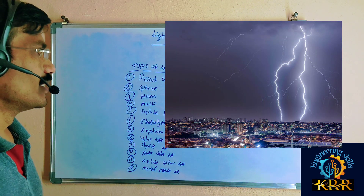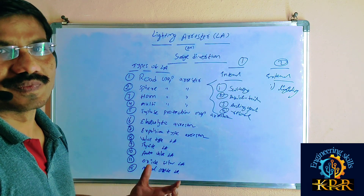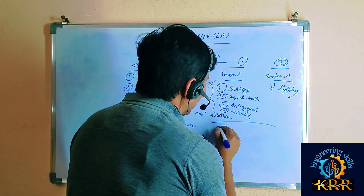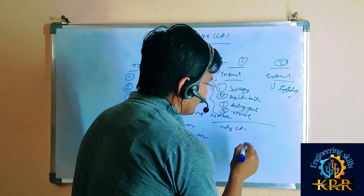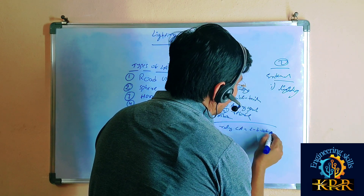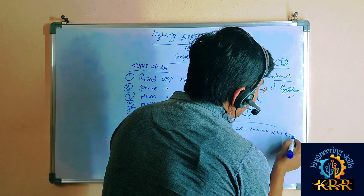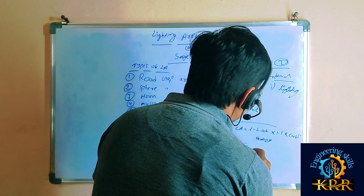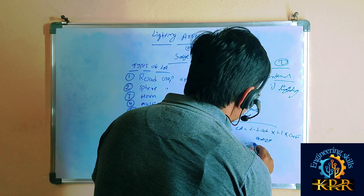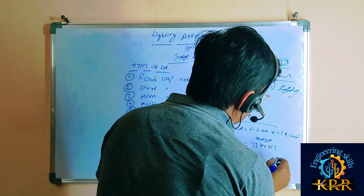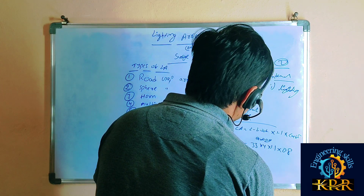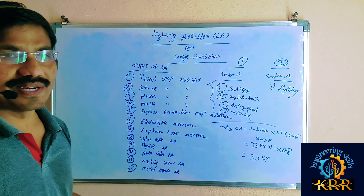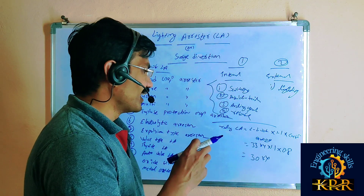Basically, how to calculate the rating of lightning arrestors: the rating of a lightning arrestor is equal to the line-to-line voltage multiplied by 1.1, multiplied by the coefficient of grounding, which is 0.8. For example, if the operating voltage is 33 kV, the lightning arrestor rating required will be 30 kV.